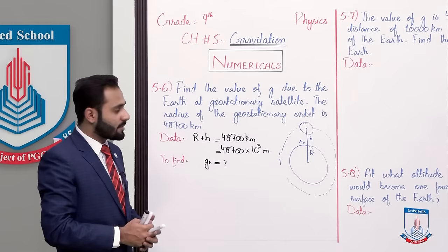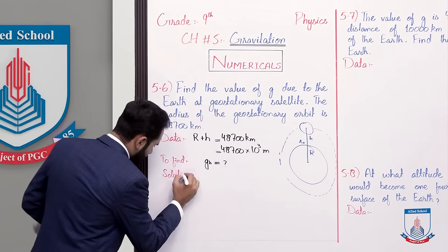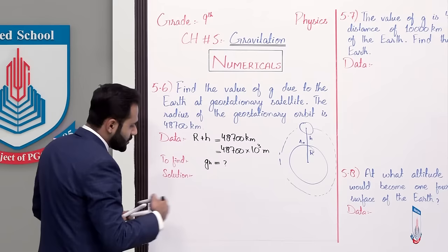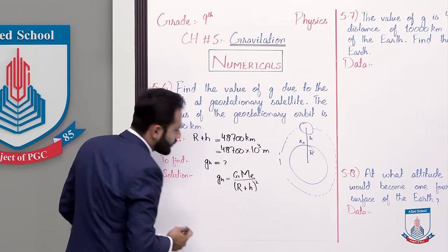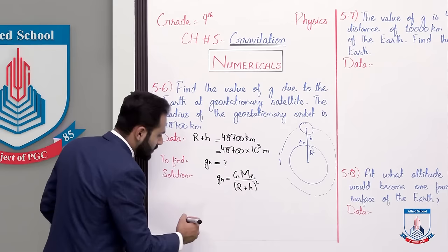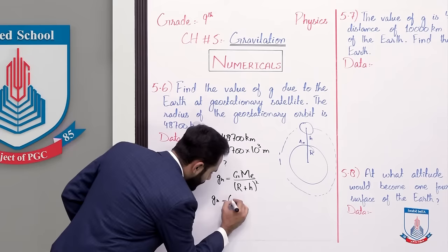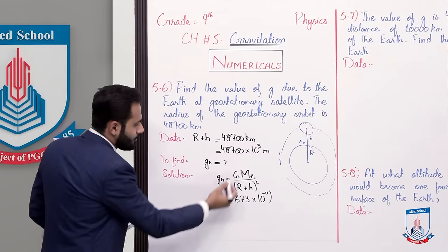Write the solution: as we know, g_h is equal to G times mass of Earth over (r plus h) whole squared. Putting values in this formula: g_h equals G, the gravitational constant whose fixed value is 6.673 multiplied by 10 to the power minus 11, times mass of Earth, which is 6 multiplied by 10 to the power 24 kg.